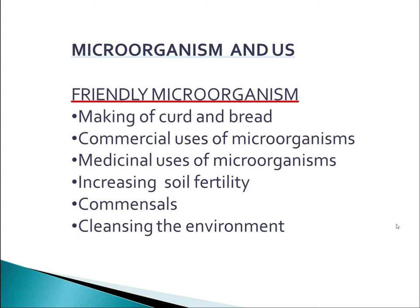Next are the commercial uses of microorganisms. Microorganisms are used on a large scale to produce alcohol, wine, and acetic acid — that is, vinegar. Yeast is used for the commercial production of alcohol and wine. For this purpose, yeast is grown on natural sugars present in grains like barley, wheat, rice, and crushed fruit juices.